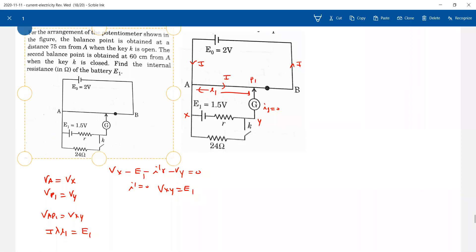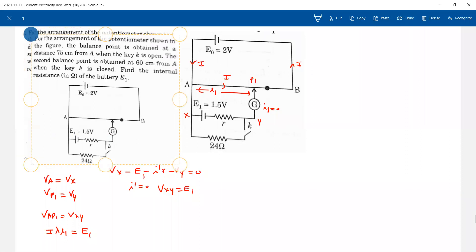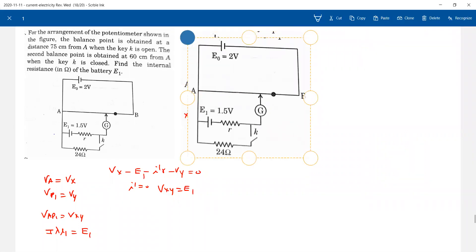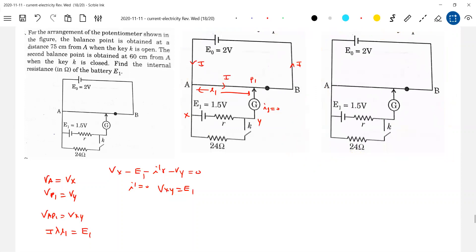Now, after this, I'm going to close the switch. And after closing the switch, this particular point, the balance will shift somewhere. So no current flows through galvanometer now also.